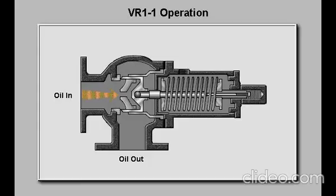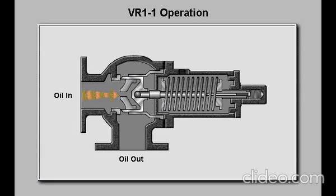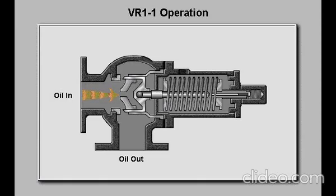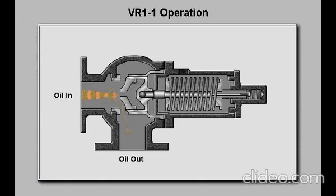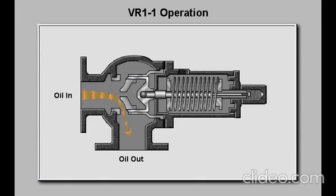If lube oil pressure in the pump discharge header exceeds 101 PSI, the cup disc in the body of the relief valve will be forced in the direction of the spring, overcoming the spring tension, and lube oil will flow through the cutouts in the seat bushing and return to the lube oil tank.